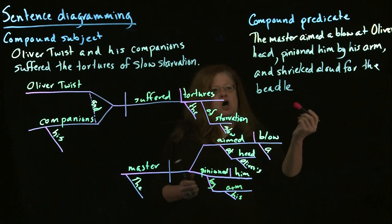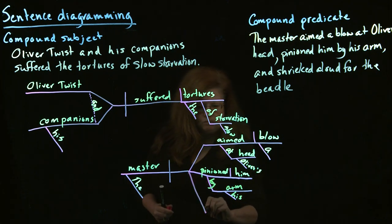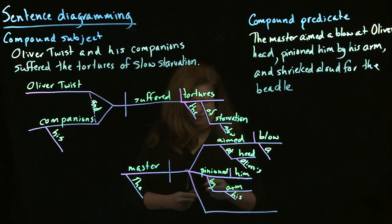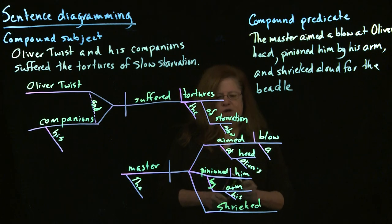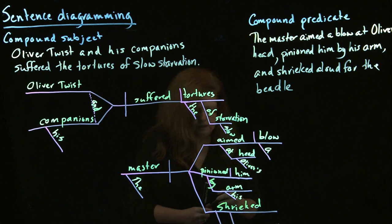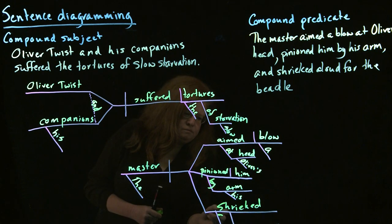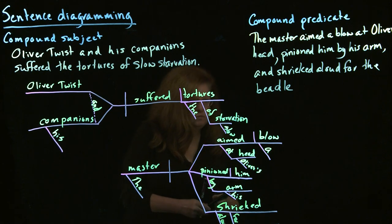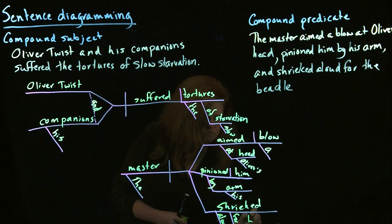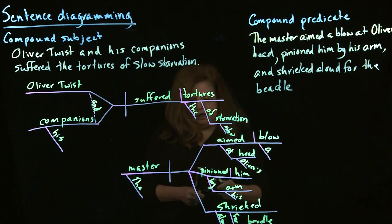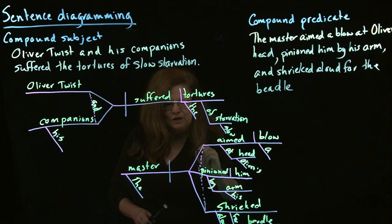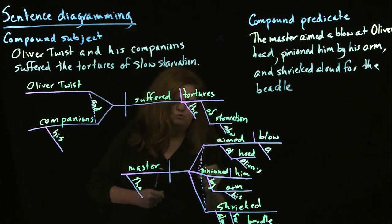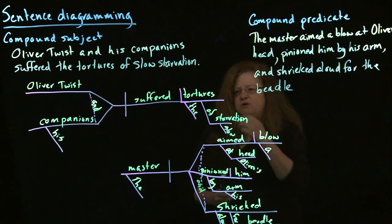And then we have our third branch. We have shrieked. And we have some modifiers here. Aloud for the beetle. And then we have our conjunction and. We tie all of these things together. And this is supposed to be a straight line. I didn't have quite the letters straight. And we can use the word and as part of our tying it together.